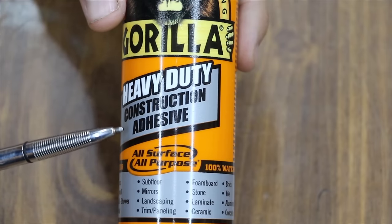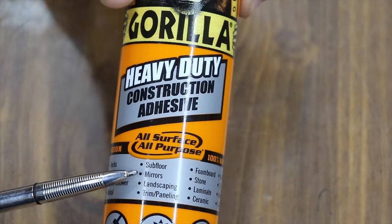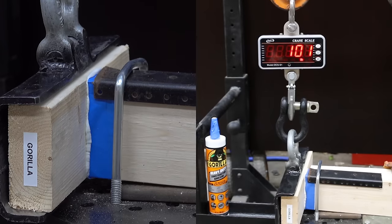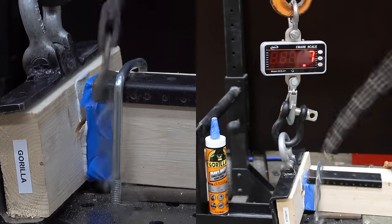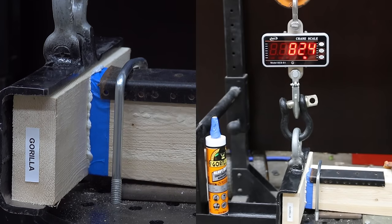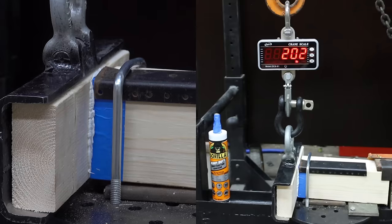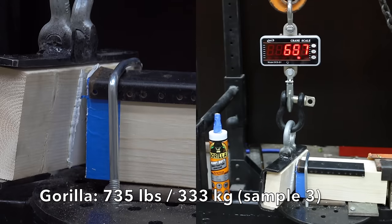Really heavy-duty construction adhesive is an all-purpose adhesive that's 100% waterproof. Just like all construction adhesives, it'll work on wood, metal, plastic, and a lot more. The first was only 574. The second was up quite a bit to 977. The third was down again to 735.